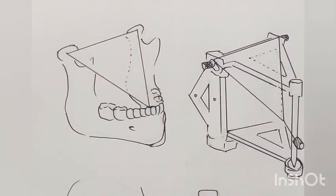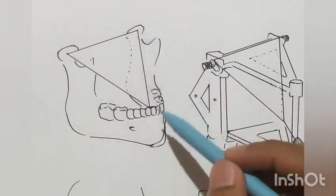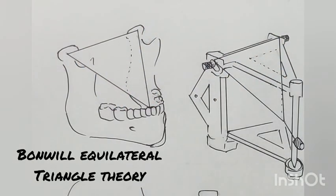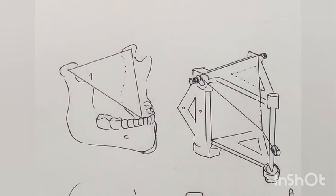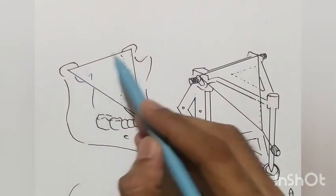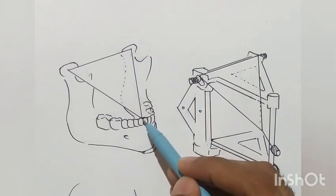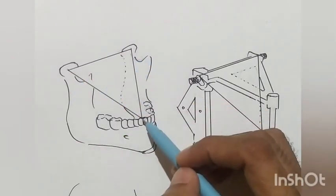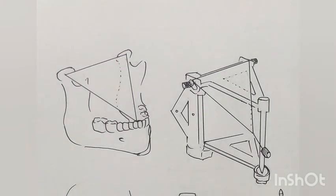Why do we need a face bow? This is the equilateral triangle theory by Bone Will, which you must have studied in your second year pre-clinic. It says that when we connect the two condyles with the central point of contact of lower incisors, this makes a triangle — an equilateral triangle with each side 4 inches.